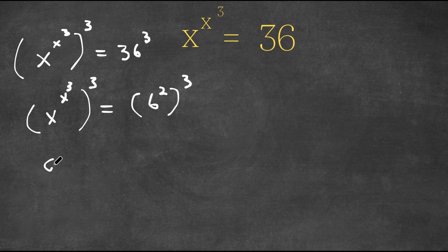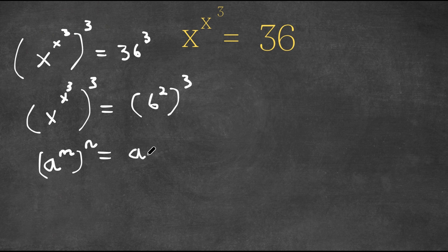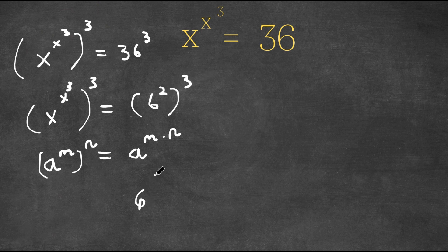Now if we have something in the form a to the power of m to the power of n, this is equal to a to the power of m times n. So as you can see here, 6 squared to the power of 3 would equal 6 to the power of 2 times 3, which is 6 to the power of 6.